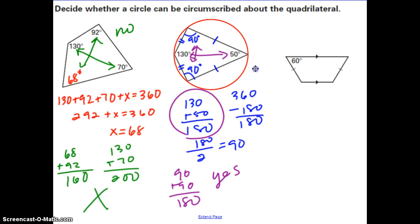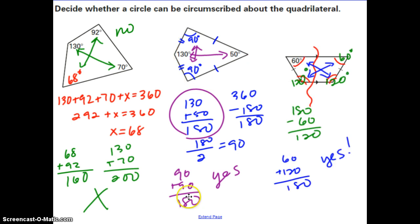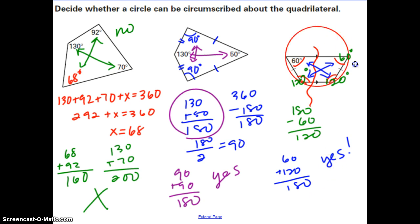Pause and find the missing angles of this isosceles trapezoid, then answer whether a circle can be circumscribed about it. Hopefully you found the angles to be 60 degrees and 120 degrees using properties of isosceles trapezoids. The answer is yes — the opposite angles are supplementary, so we can circumscribe a circle around that trapezoid.